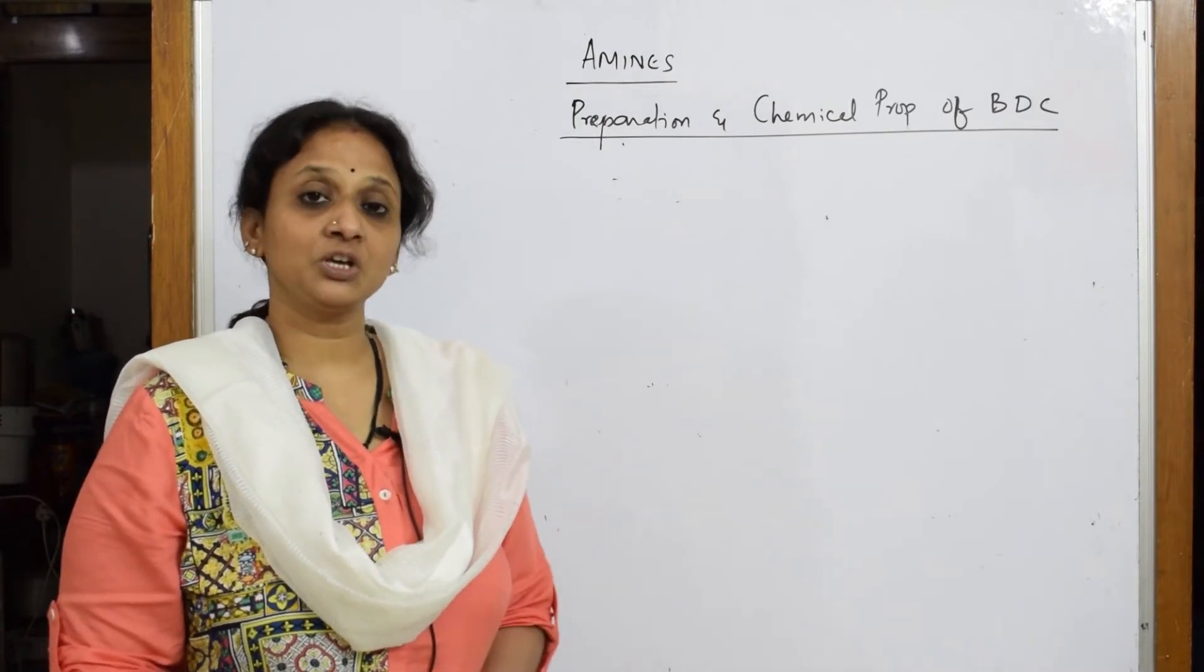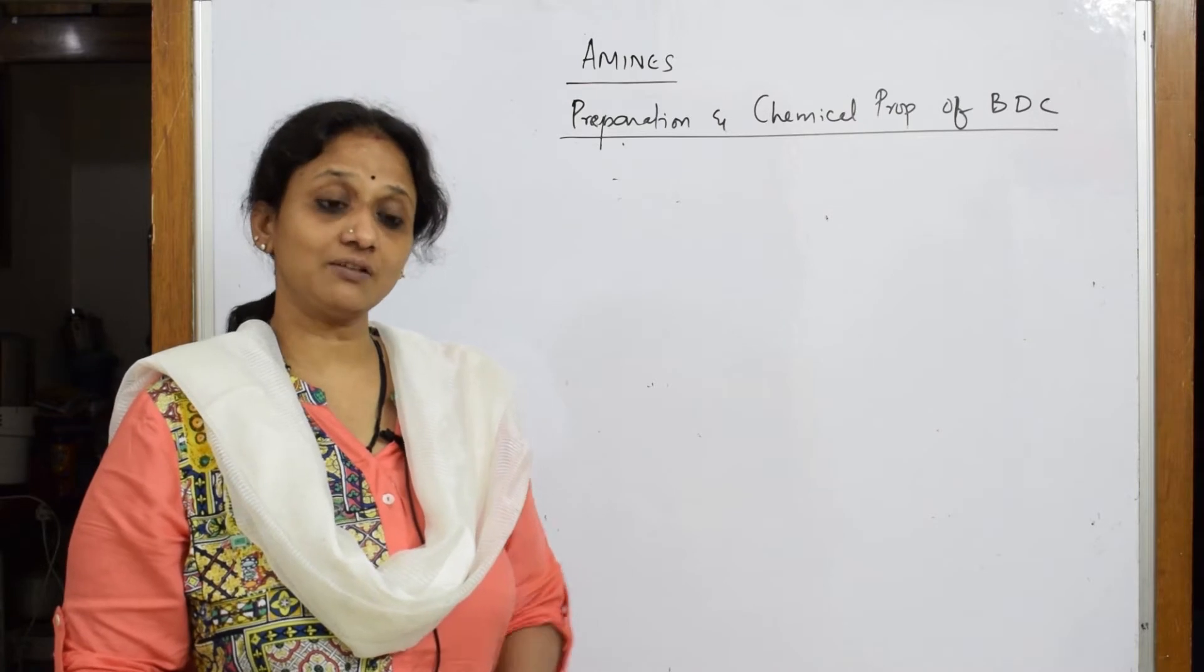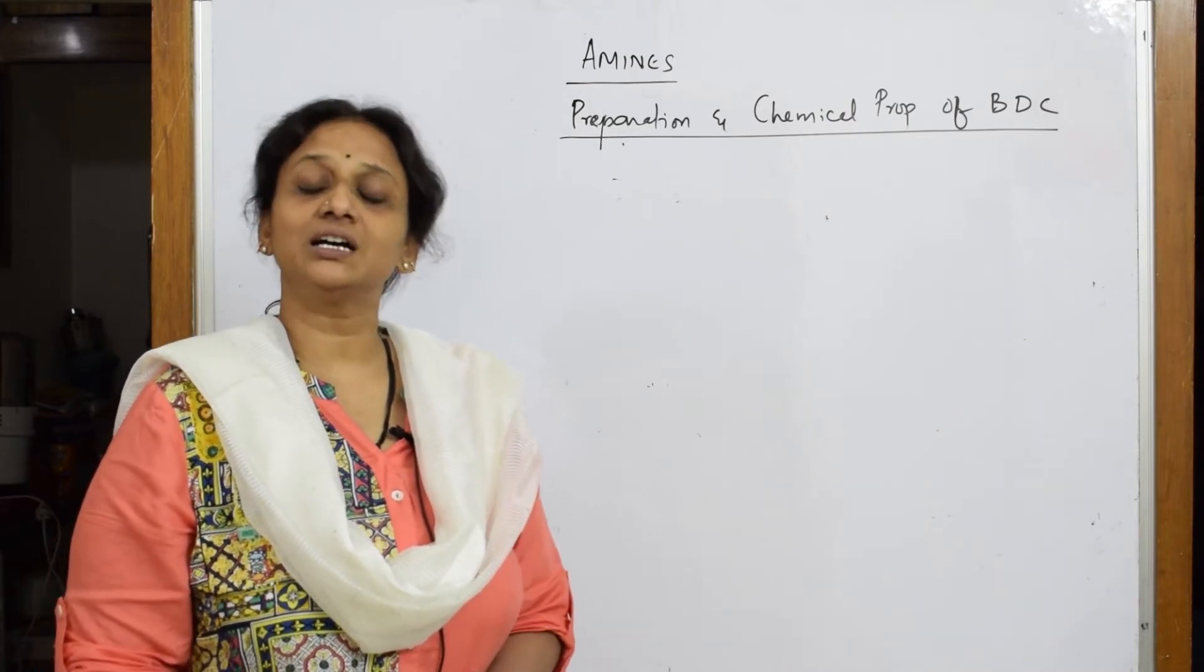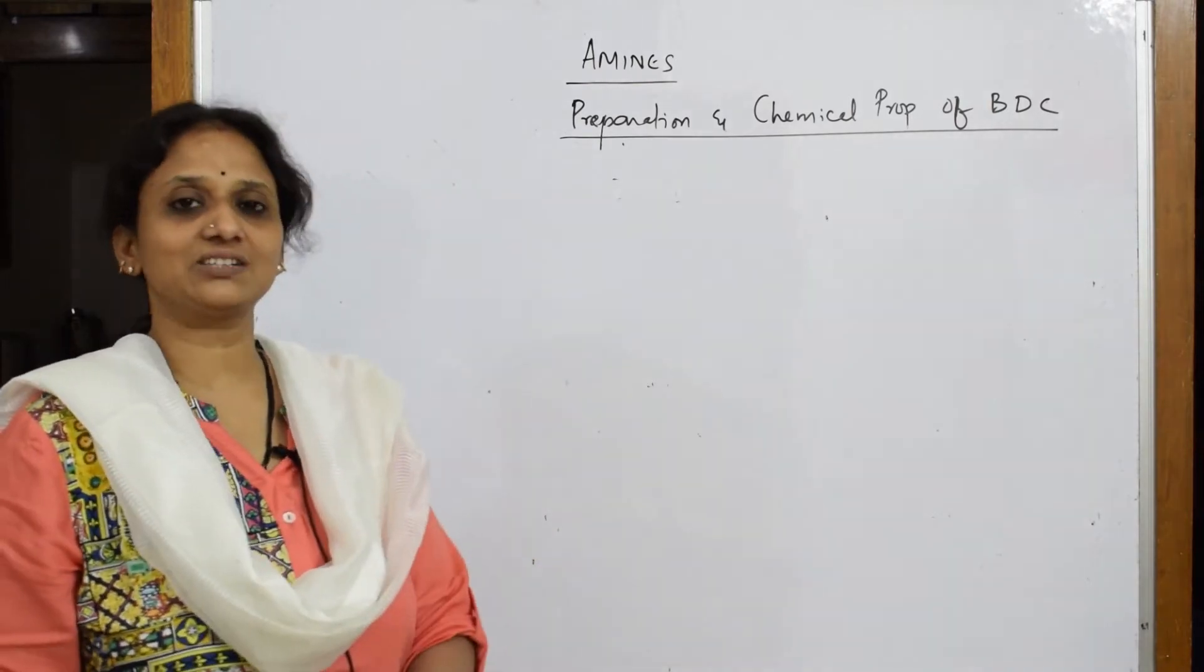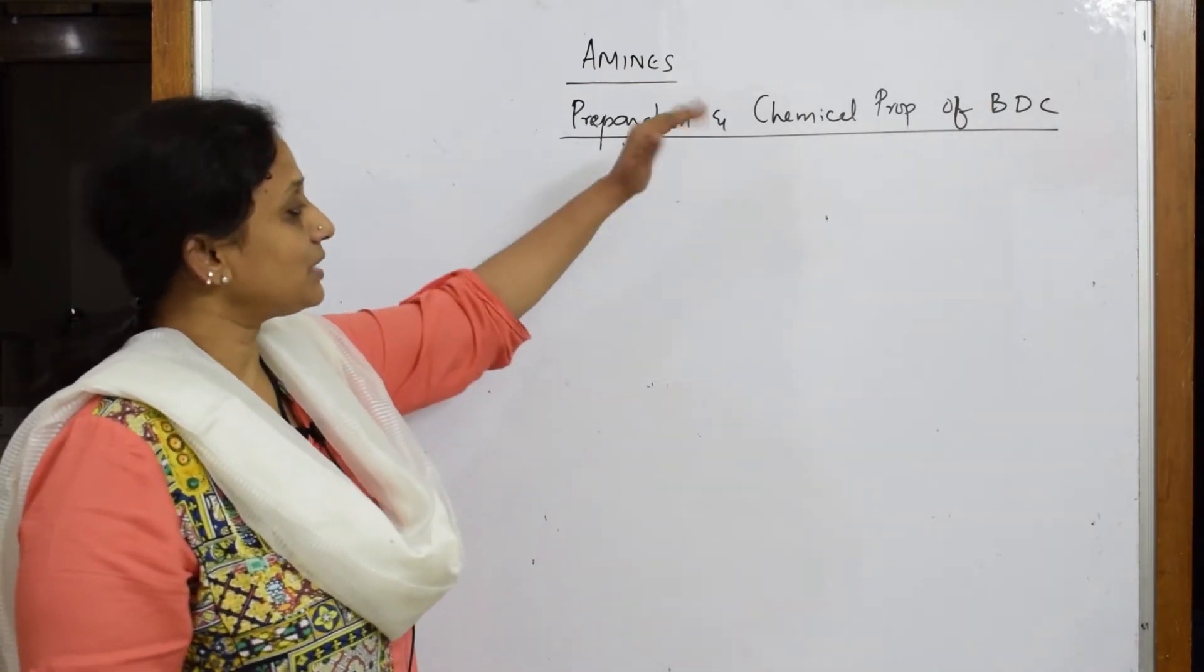You also have cyano, then you also have a subclass of compounds that is BDC - benzene diazonium chloride. We are going to study that very important and easiest reaction of this chapter. I'm going to show you the preparations and chemical properties together.